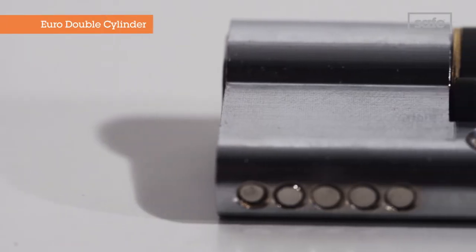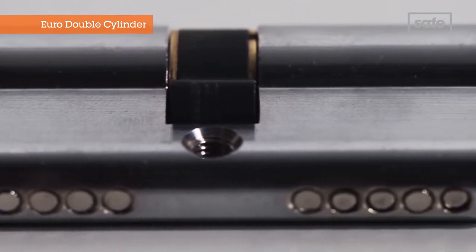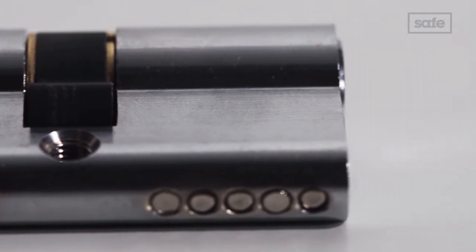There are three measurements needed when it comes to Euro cylinders. And using this standard Euro double cylinder as an example, we can show you how to find all three.